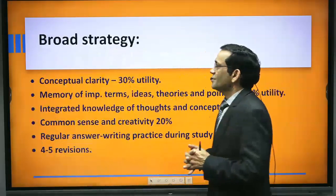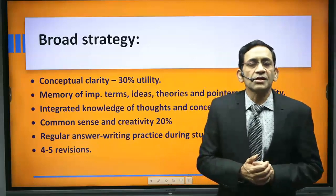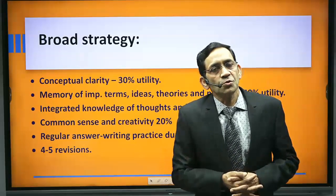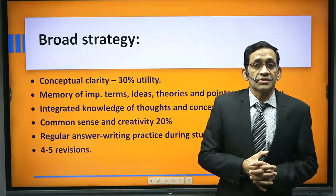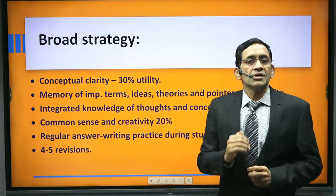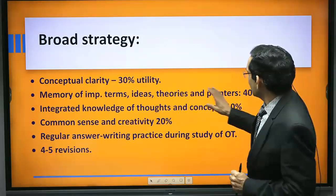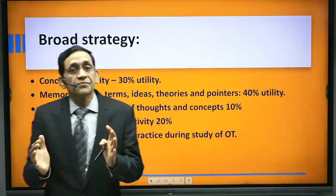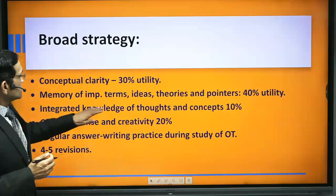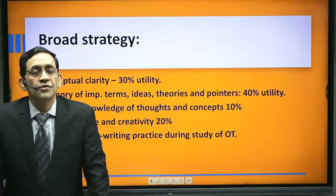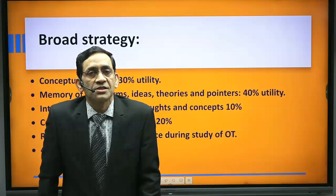The broad strategy requires exact and high-level conceptual clarity. On the basis of conceptual clarity, you can write around 30 to 40 percent of the content. But that is not sufficient — you should have memory of important terms like organization structure, hierarchy, span of control, scalar chain, principles, ideas, and theories. These will provide the main content for your answers. Integrated knowledge of various theories and concepts in OT will also help other chapters — for example, knowledge of organic structure will help you write answers on flat structure and decentralization.